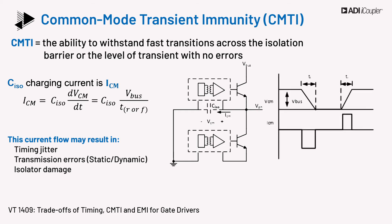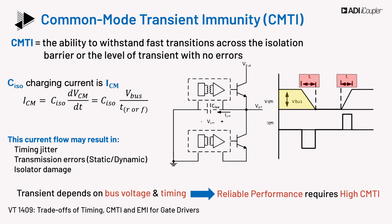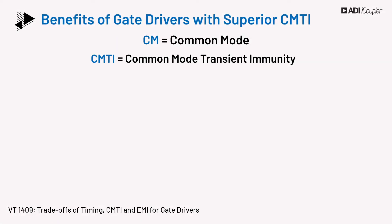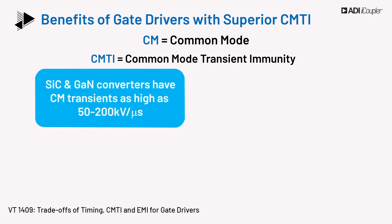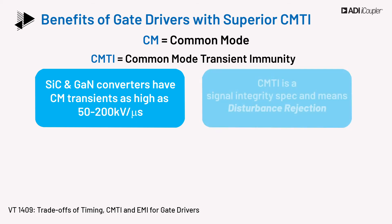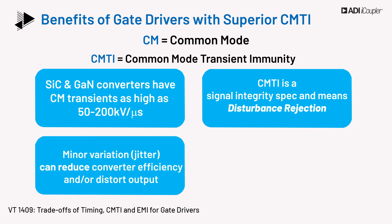The slew rate is dependent on two quantities: the bus voltage and the timing, which is the rise or fall time of the switching node. Thus, for reliable performance, high CMTI is required. Power converters inherently generate common mode transients. SiC and GaN systems may have common mode transients between 50 to 200 kV per microsecond. CMTI is a signal integrity spec and gives a measure of disturbance rejection. CMTI failure may result in timing jitter, which changes propagation delay.